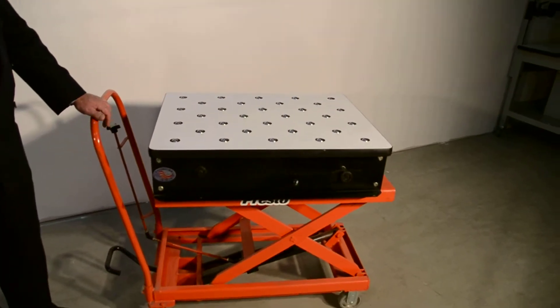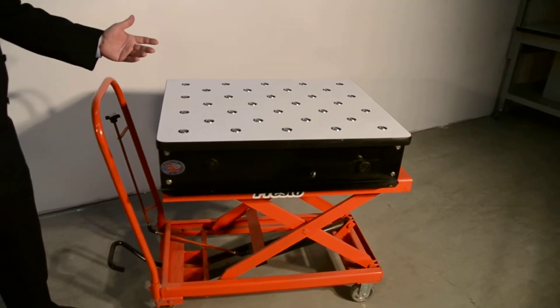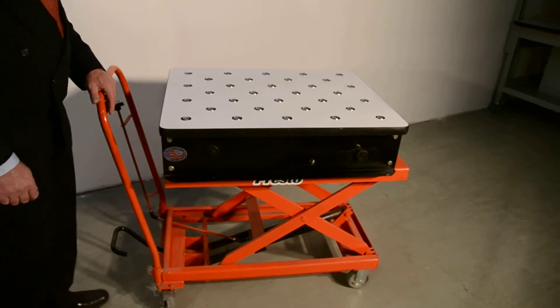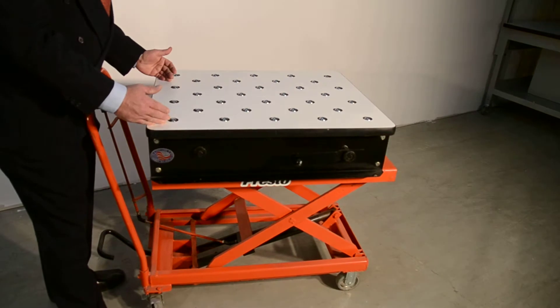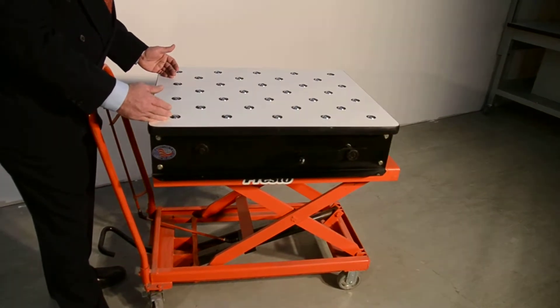What you would do is roll up to a table at whatever height it may be. You would push the handle down as shown. You would feed your product onto the mobile retractable ball transfer table.